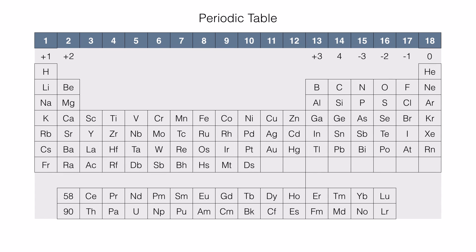If you look at the periodic table, you will find that there are 18 groups. The valency of group 1 elements is positive 1, since they have one electron in the valence shell. If you go to group 15 non-metals, they need 3 electrons to become stable, so the oxidation number or valency becomes minus 3. For group 16, the valency is minus 2, because it needs to gain 2 electrons to become stable. And for group 17, it would need 1 electron, therefore the oxidation number or valency would be minus 1.